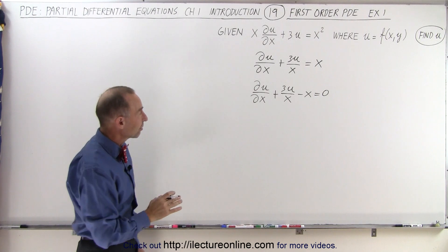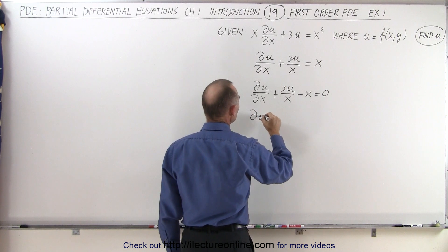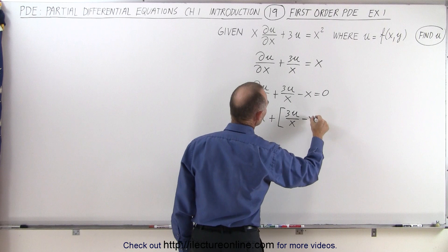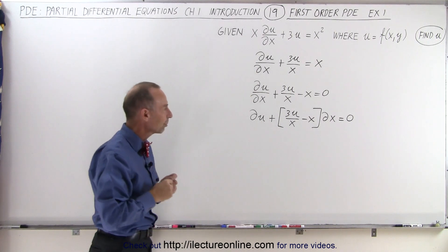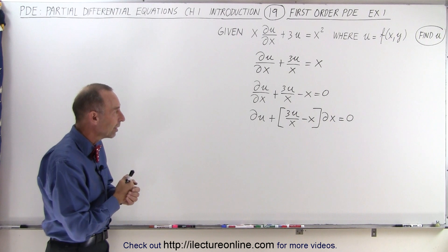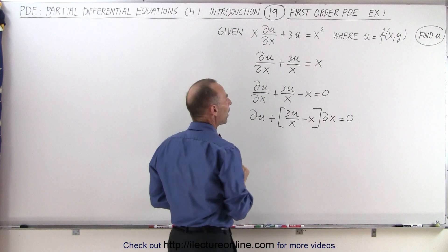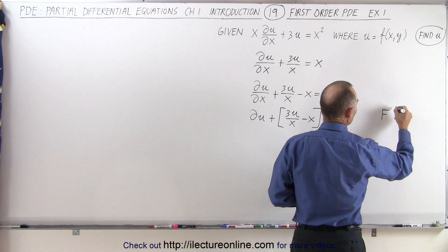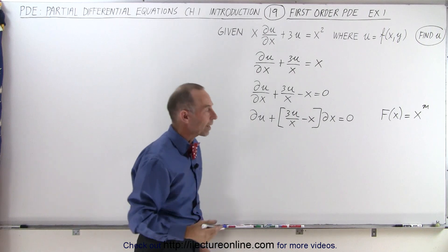Now we're going to multiply both sides of the equation by a partial of x. So on the left side we get the partial of u plus the quantity 3u over x minus x times the partial of x, equal to zero. Now we have something that looks very much like an ordinary differential equation, so we're going to try to find the integrating factor. Since we don't have the partial of u with respect to y, we might be able to get away by using an integrating factor without the y in there.